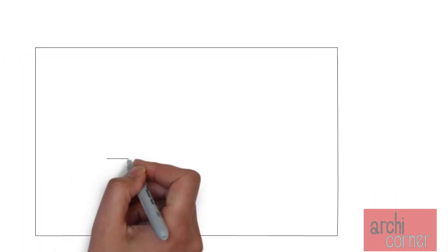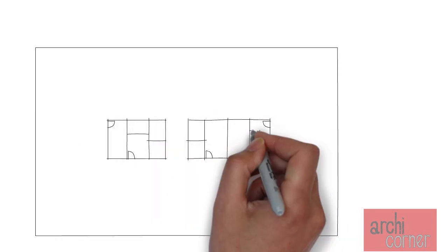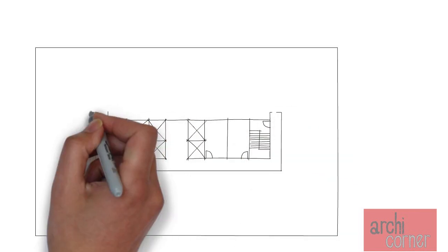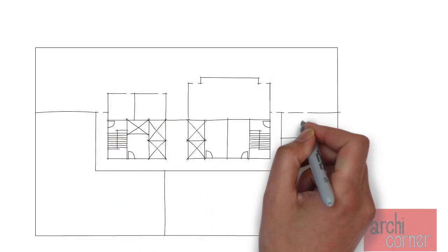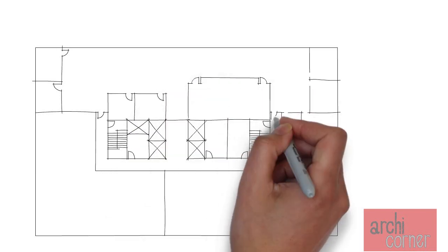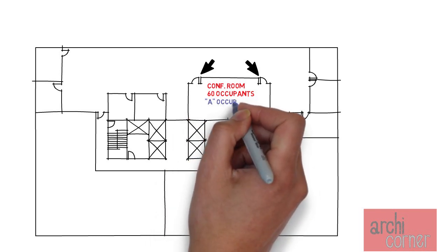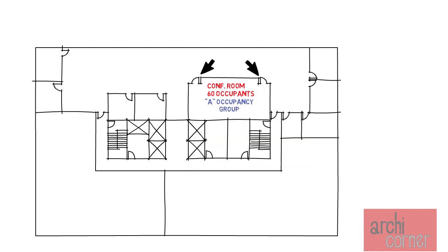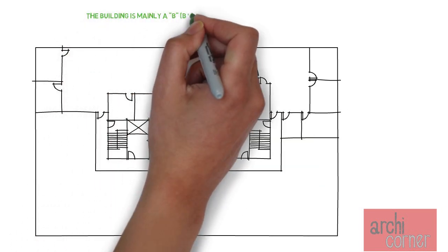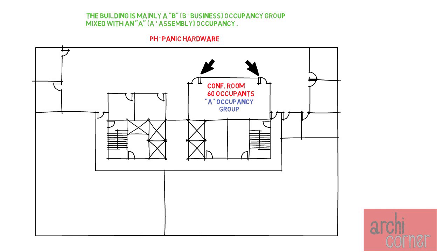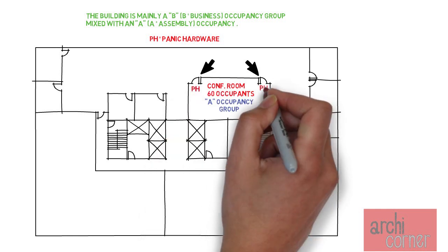Now let's see an example. This is a typical floor in a multi-story office building that requires the use of stairs to egress. It's not an A or E occupancy building overall, but there is a conference room with more than 50 occupants in this suite. This means the room requires two exits, and since it has over 50 occupants it is considered an A occupancy for egress purposes. Therefore, even though the suite is generally office use, this room is assembly use and is required to provide panic hardware on both doors.